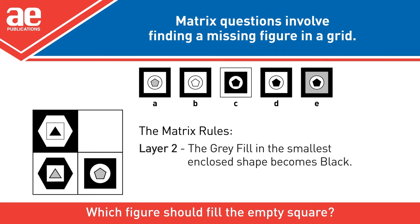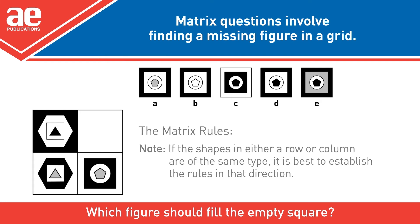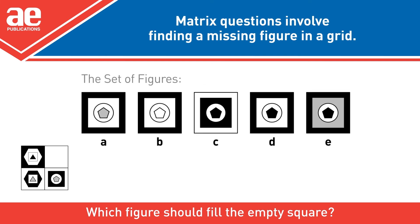Layer 2: The grey fill in the smallest enclosed shape becomes black. If the shapes in either a row or column are of the same type, it is best to establish the rules in that direction.